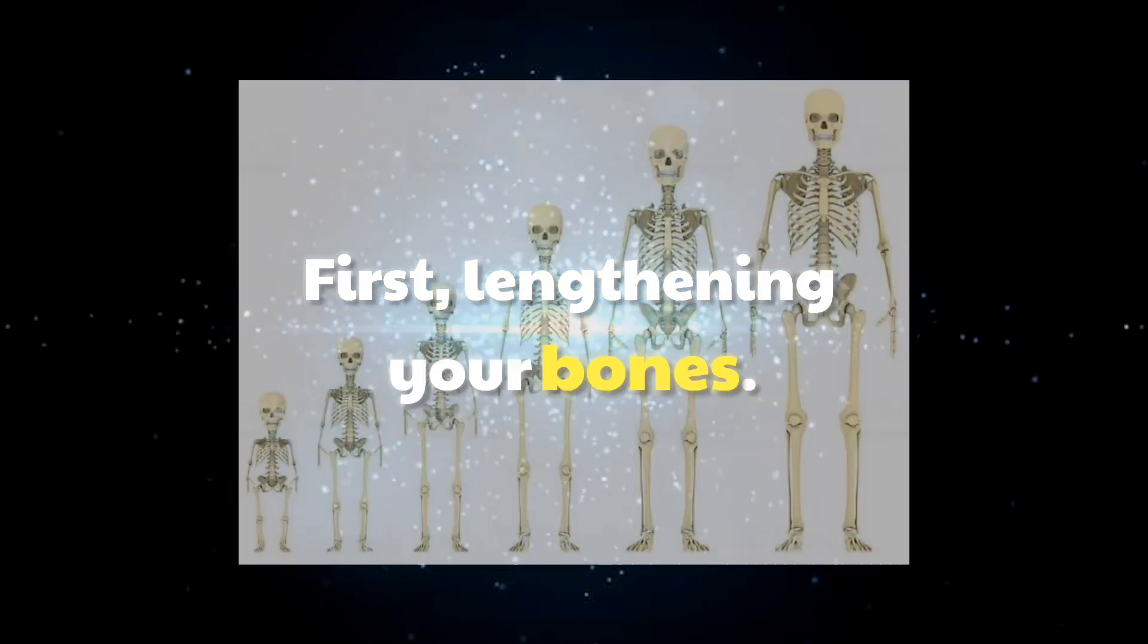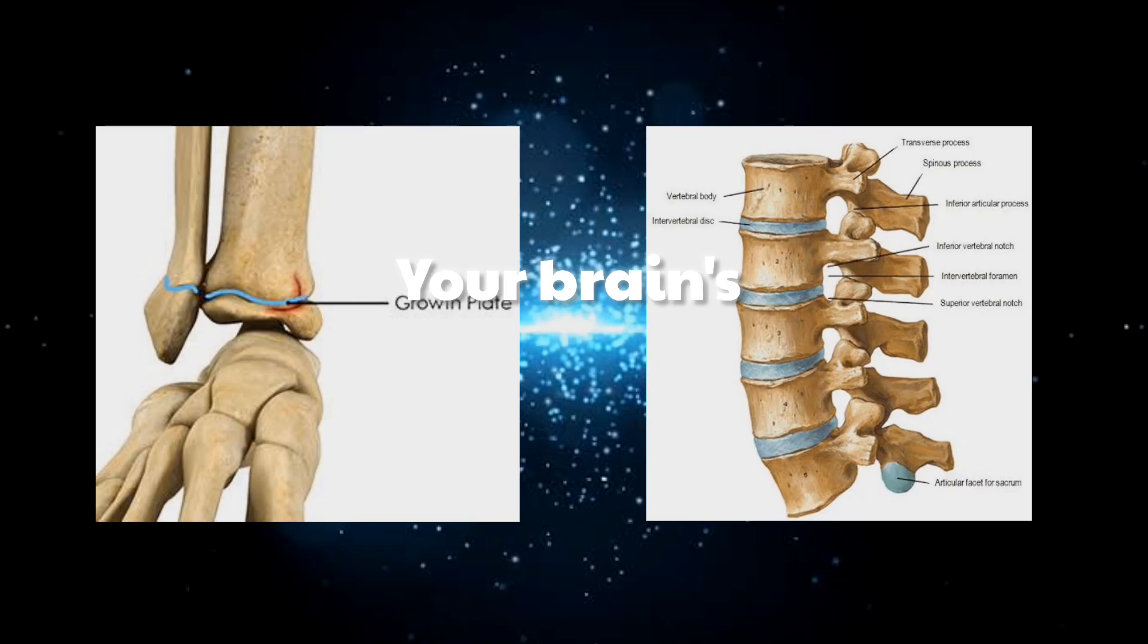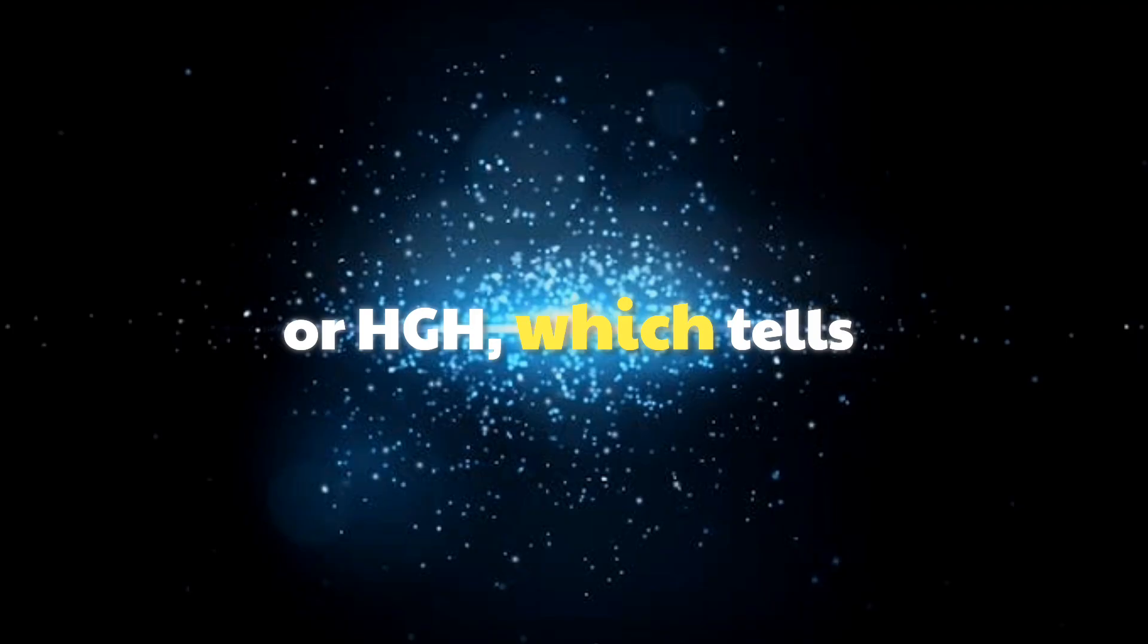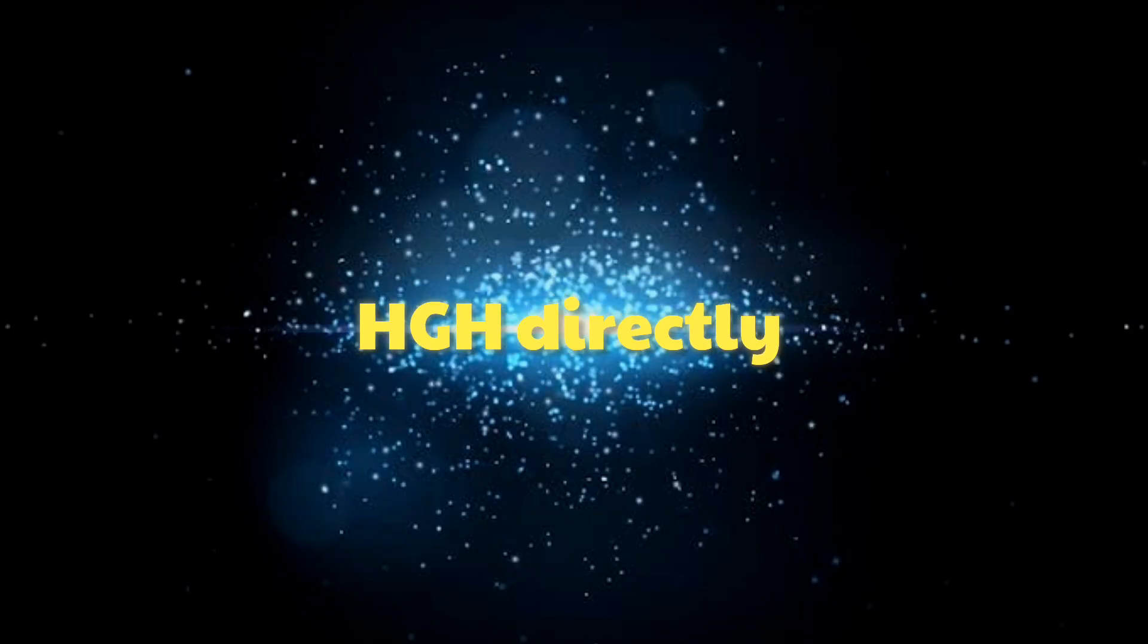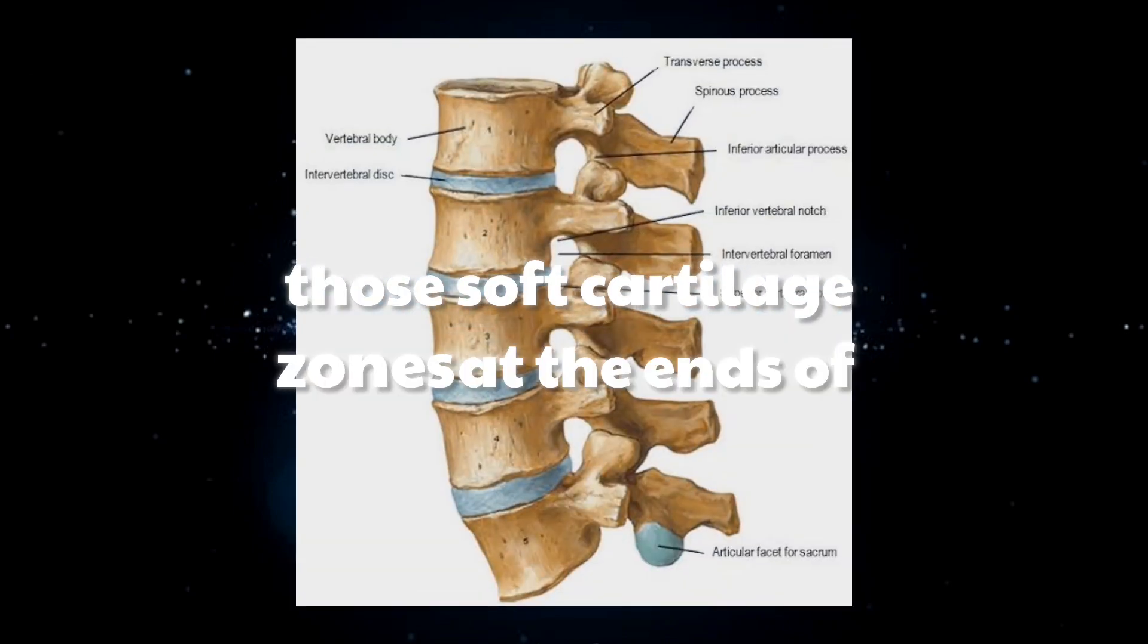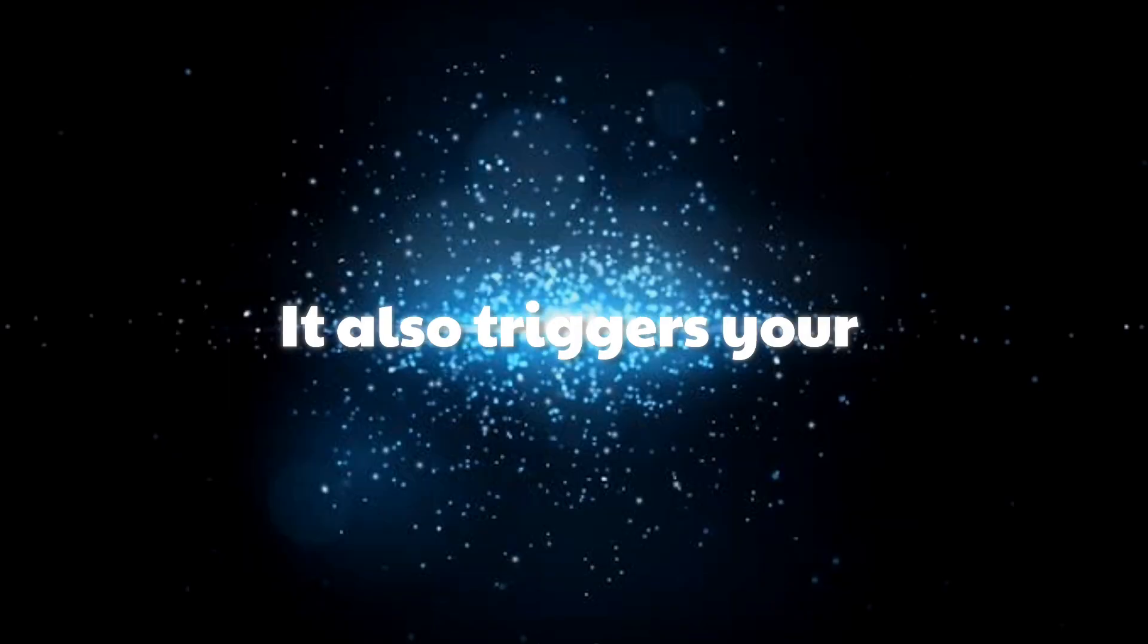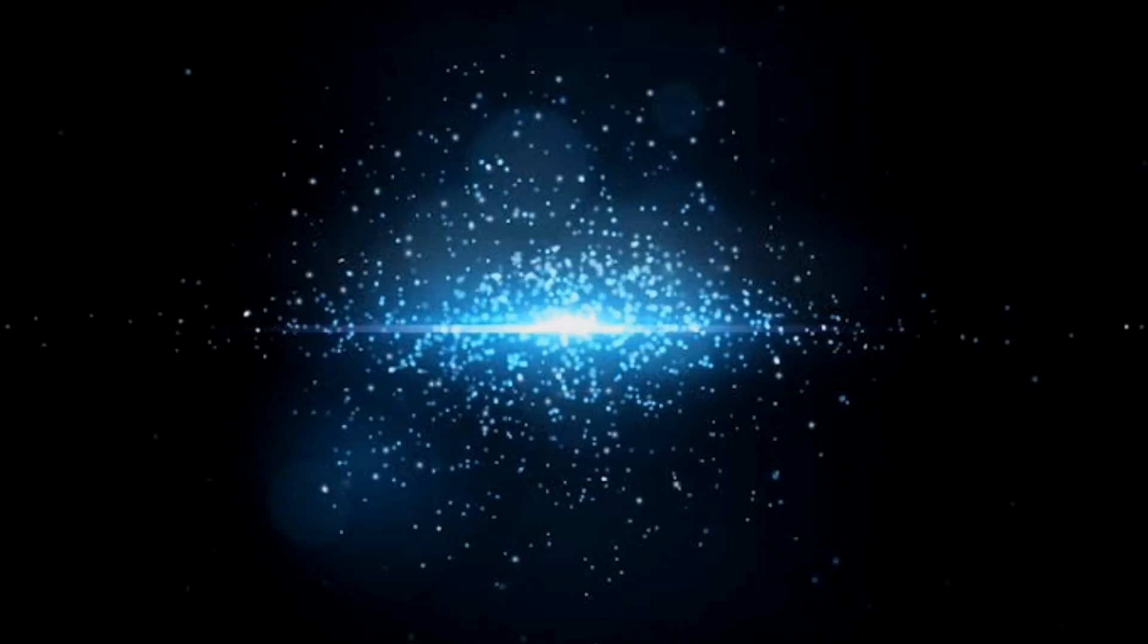The science of height growth. Height growth comes down to two biological processes. First, lengthening your bones. Second, activating your growth plates. Your brain's pituitary gland releases human growth hormone, or HGH, which tells your bones and tissues to grow. HGH directly targets your growth plates, those soft cartilage zones at the ends of your long bones, making them multiply and turn into bone, gradually lengthening your skeleton. It also triggers your liver to release IGF-1, which supercharges this whole process.